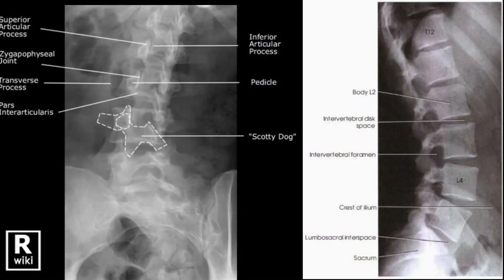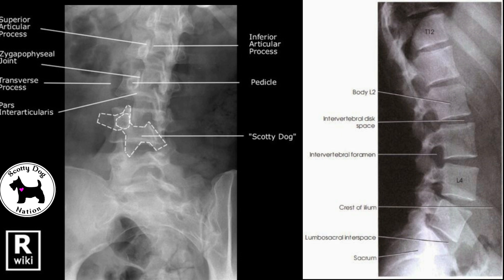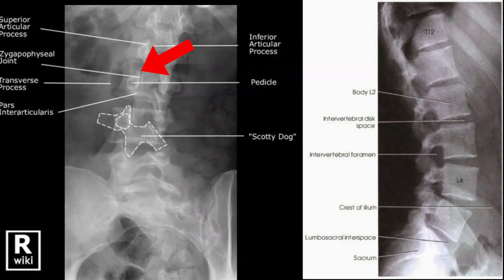Now when you have a question about the lumbar vertebrae, think about what you see on an oblique L-spine with the Scottie dogs. You don't see any intervertebral foramina on those, do you? It's only the zygapophyseal joints. On the lateral, you see the intervertebral foramina — the circles.